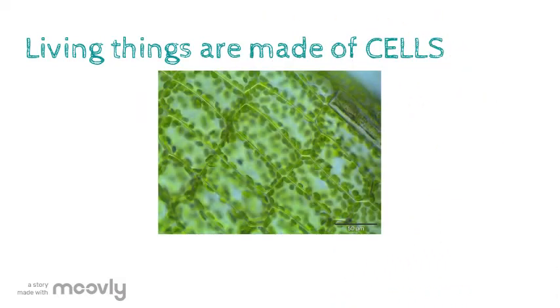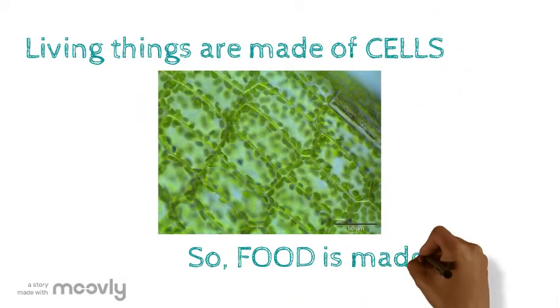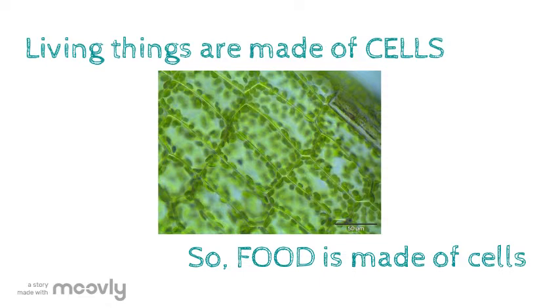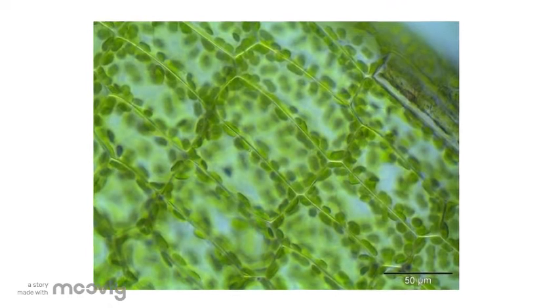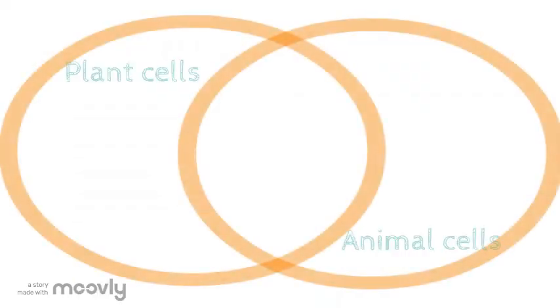Living things are made of cells, and because food is made from living things, food is made of cells. But what are cells made of? Cells from plants and cells from animals have a lot in common. They are all made of the same molecules, called biomolecules.